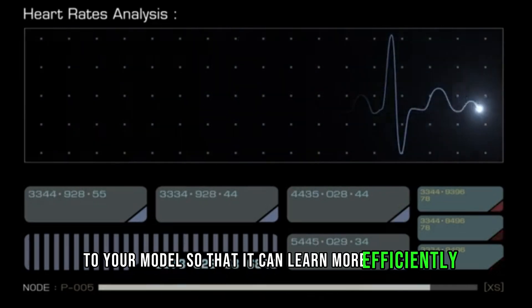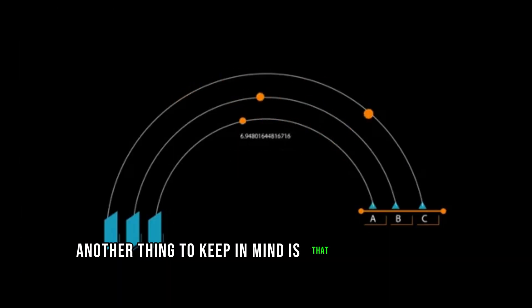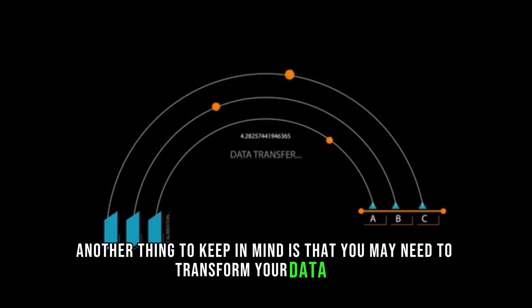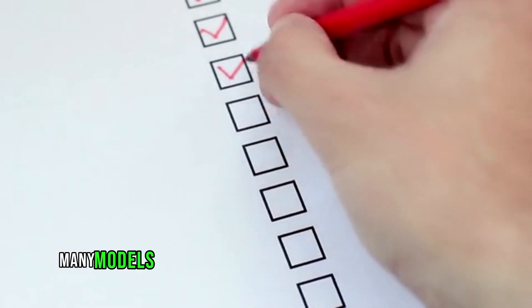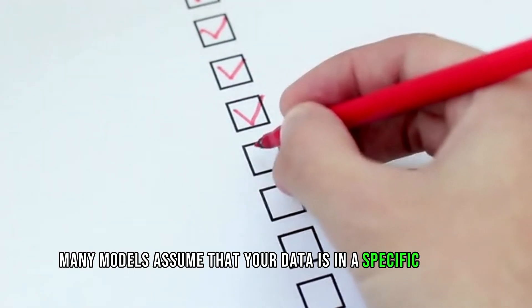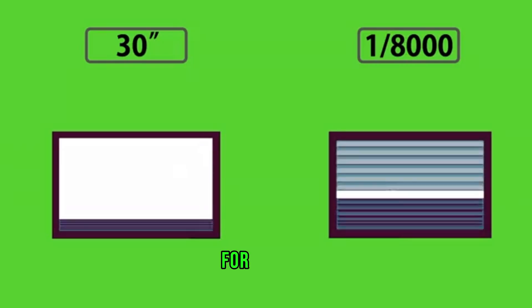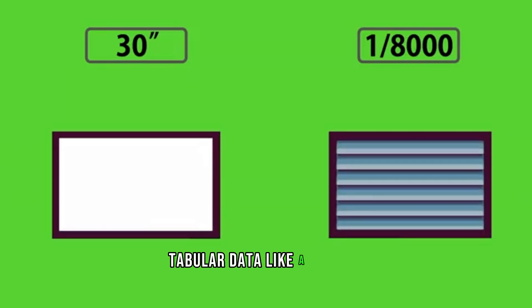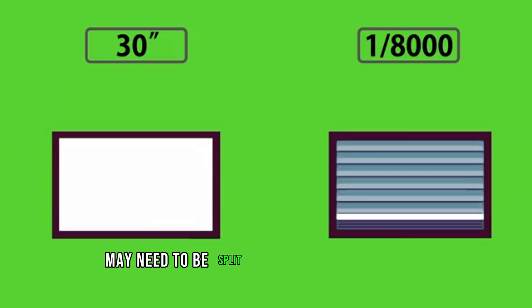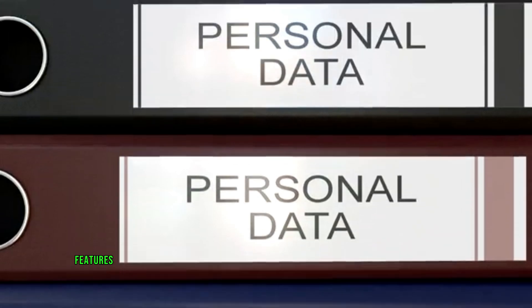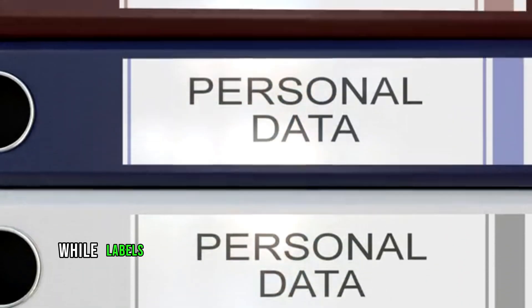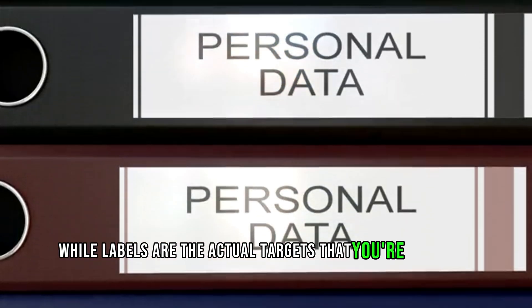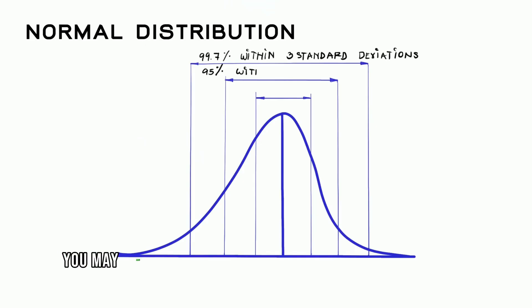Another thing to keep in mind is that you may need to transform your data into a format that works for your model. Many models assume that your data is in a specific format. For example, tabular data like a CSV file may need to be split into features and labels. Features are the values that you use to make predictions, while labels are the actual targets that you're trying to predict. You may also need to normalize or standardize your data.